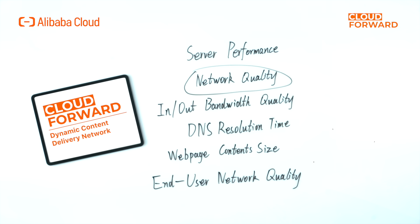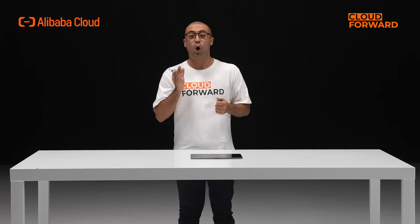There are so many factors that can influence content delivery: service performance, network quality, website bandwidth, DNS resolution, webpage content size, end user network quality — the list goes on. Some content delivery solutions, such as standard CDN service, are good at delivering static content such as files, images, and videos — static content which is cached in proxy servers near to your physical location to speed up delivery.